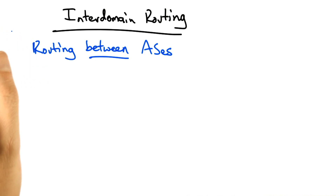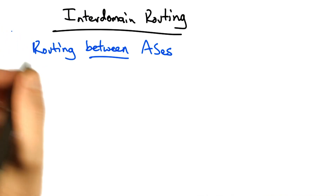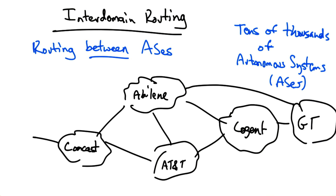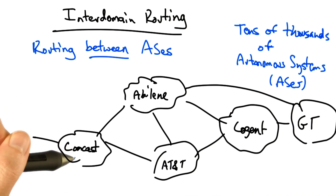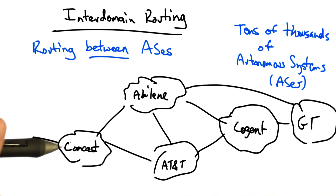We're now moving on to cover inter-domain routing, or routing between ASs. Recall that internet routing consists of routing between tens of thousands of independently operated networks or autonomous systems. Each of these networks operate in their own self-interest and have independent economic and performance objectives.